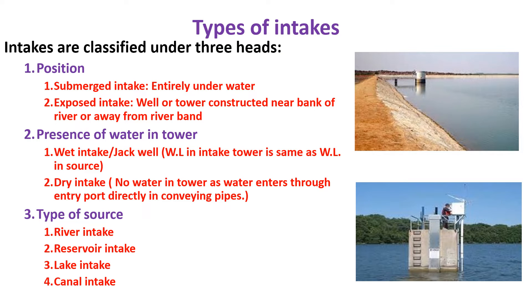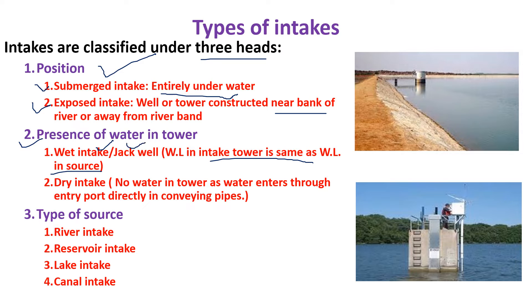There are three types of Intake classified under three heads. First, depending upon position: submerged Intake, which is entirely underwater, and exposed Intake, which is visible and generally constructed near the bank of a river. Second, based on presence of water inside the tower: if the water level inside the tower equals that in the source, it is called a wet well or jack well; if there is no water inside the tower and it is used only for valve operation, it is called a dry Intake. Third, based on the source: river Intake, reservoir Intake, lake Intake, and canal Intake.